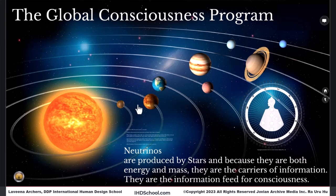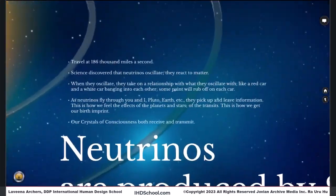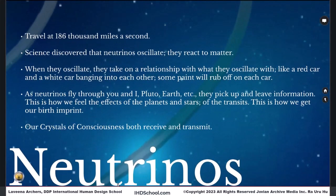Each one of these planetary aspects, we can have cycles of that, but Ra didn't focus on all of the planets, just some specific ones that we're going to explore in this course. Remember about neutrinos — they travel at 186,000 miles a second.